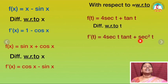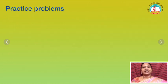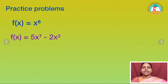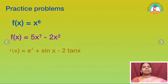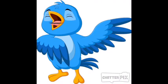So now children, if you are not practicing these differentiations it will be very difficult for you. If you are practicing, it will be easy. I am going to give you some practice problems — just 3 problems. f of x is equal to x power 6. f of x is equal to 5x power 7 minus 2x square. And f of x is equal to a power x plus sin x minus 2 tan x. You just work them out. Our friends are here to explain the next problem — listen carefully.